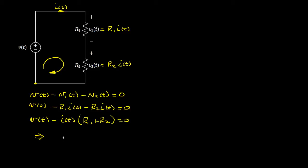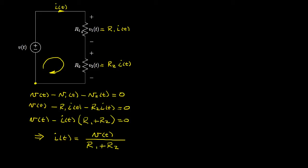This allows us to write an expression for the current. The current I of t equals V of t over the sum of the two resistances — that is, the voltage divided by R1 plus R2.